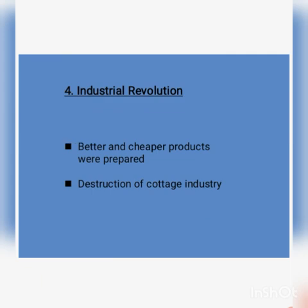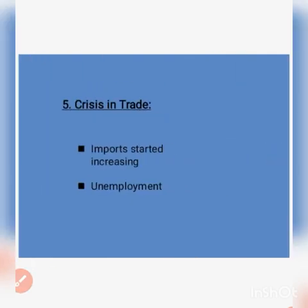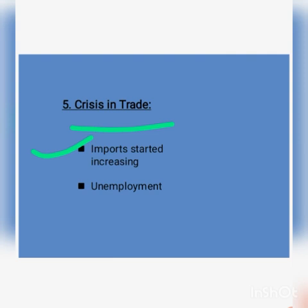The last point is the crisis in trade. British dominance caused imports to increase while exports decreased. This imbalance of trade led to widespread unemployment among Muslims, as their traditional trade and craft industries could no longer sustain them.